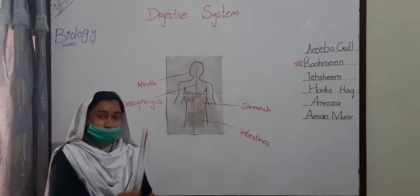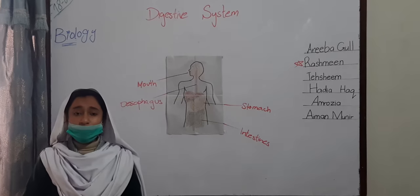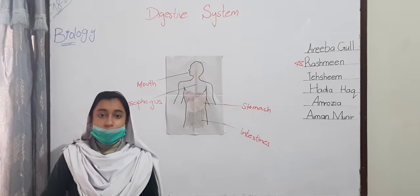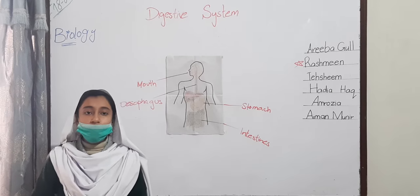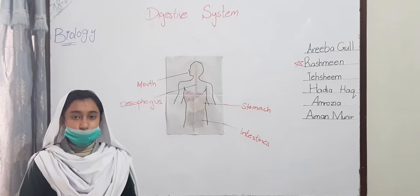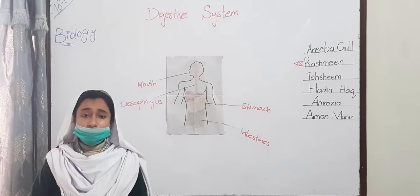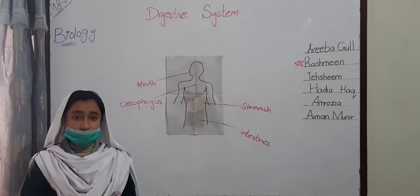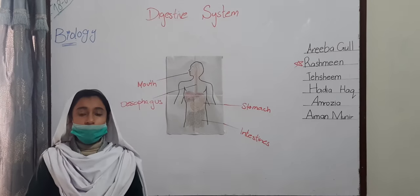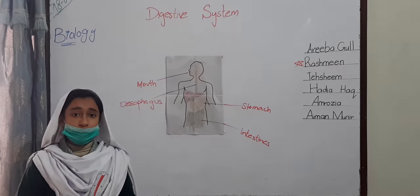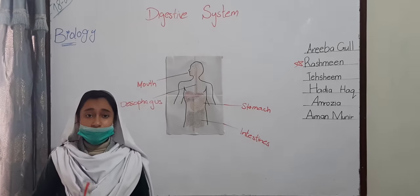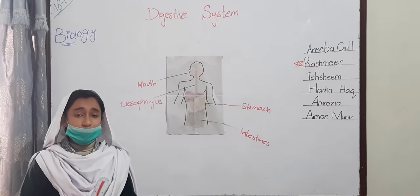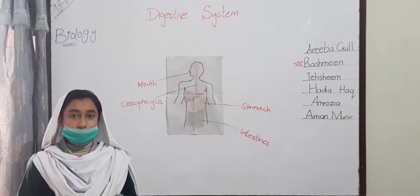Stomach. Our stomach is a large J-shaped muscular bag. It mixes the food with digestive juice. The digestive juice begins the digestion of proteins. The digestive juice also contains acid, which kills the bacteria present in our food.